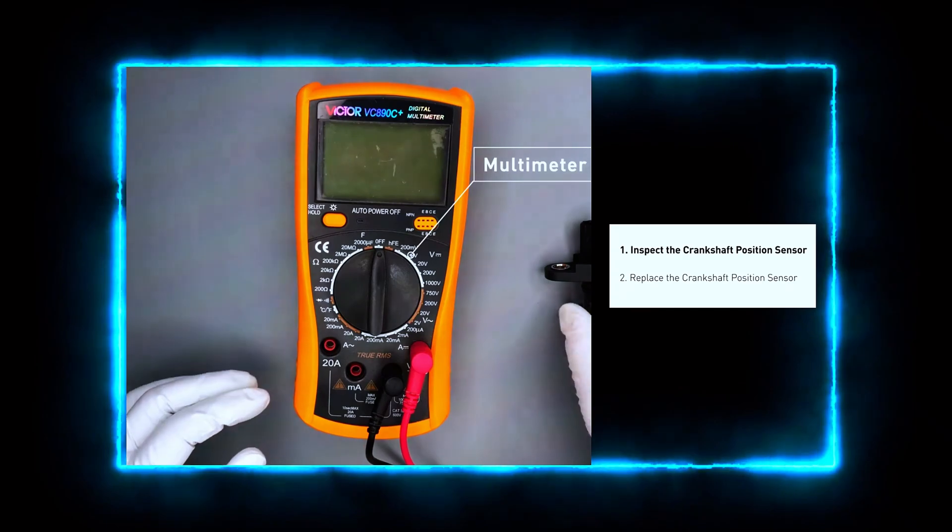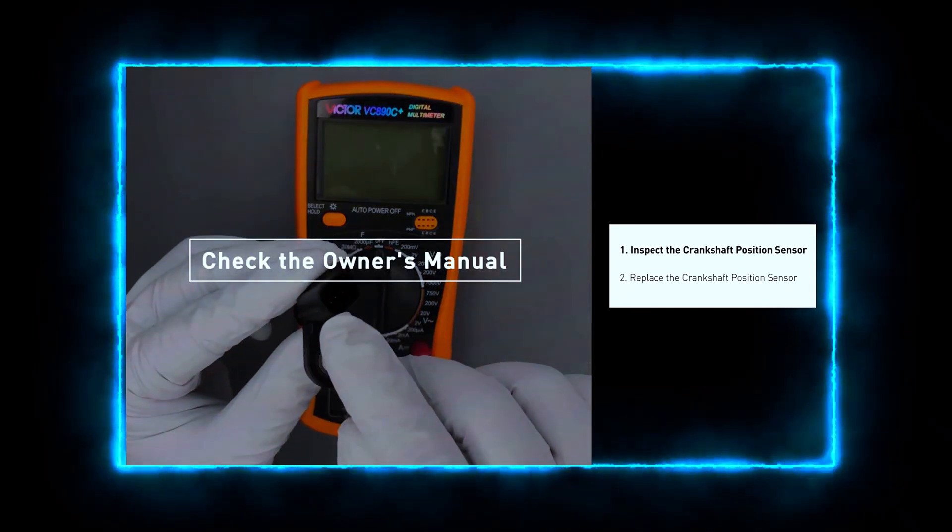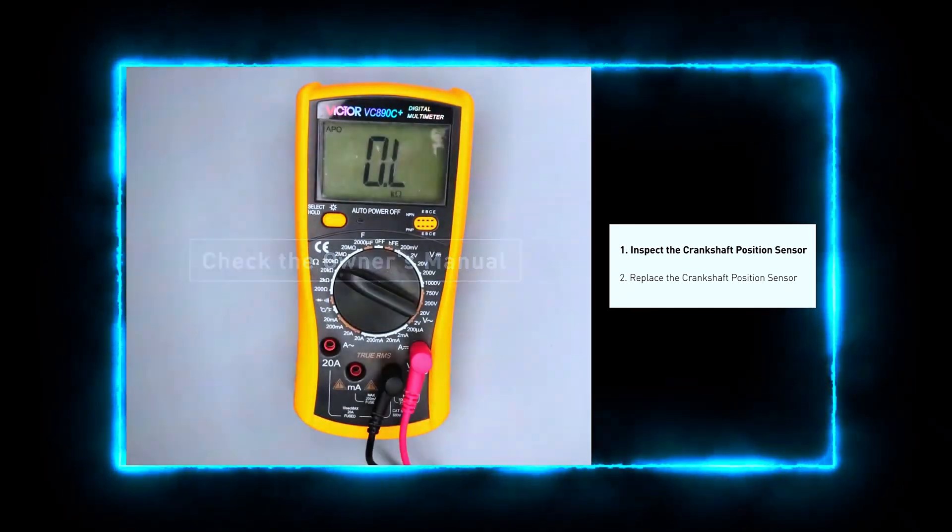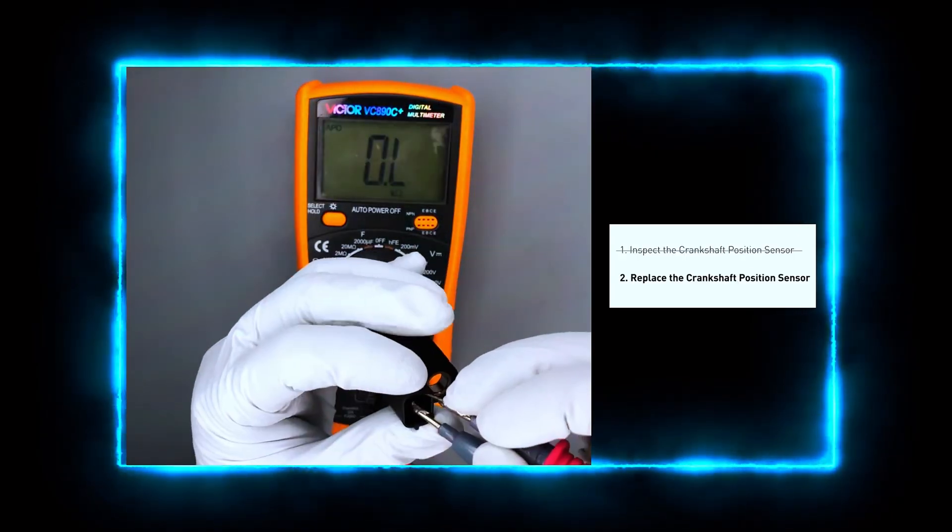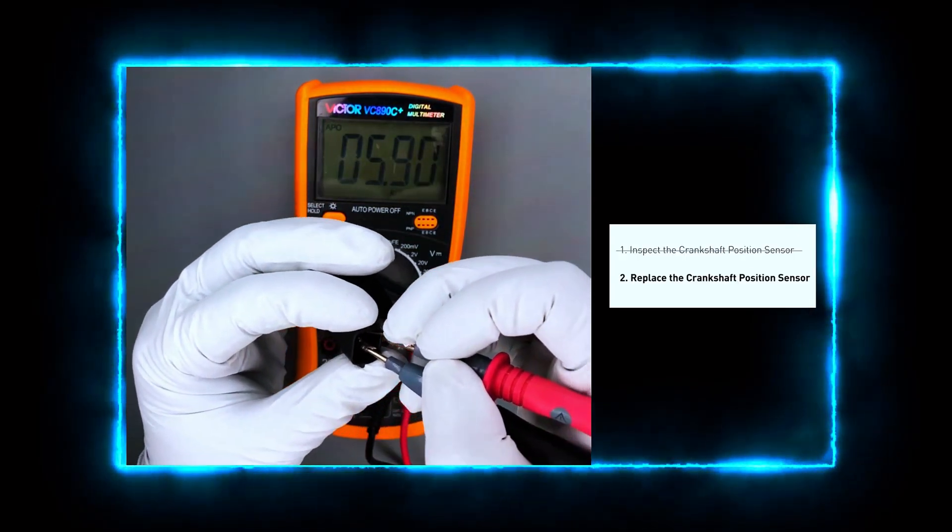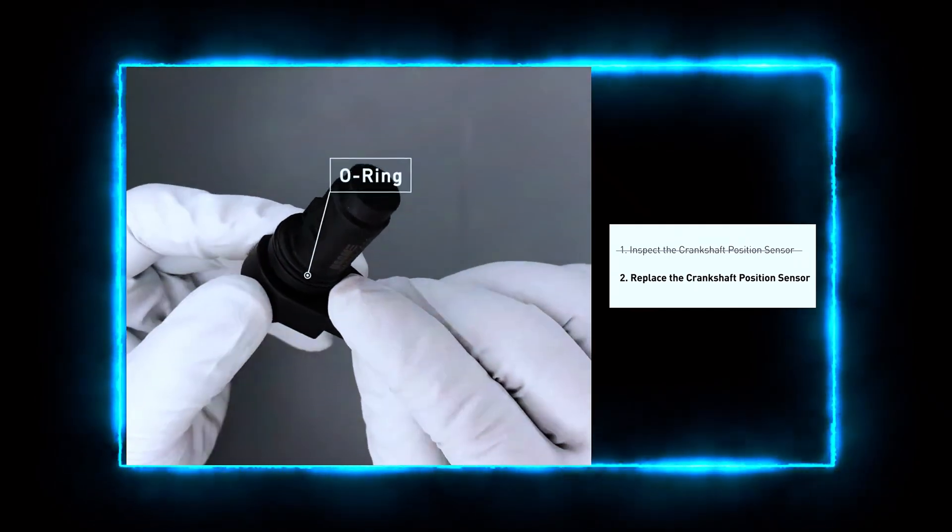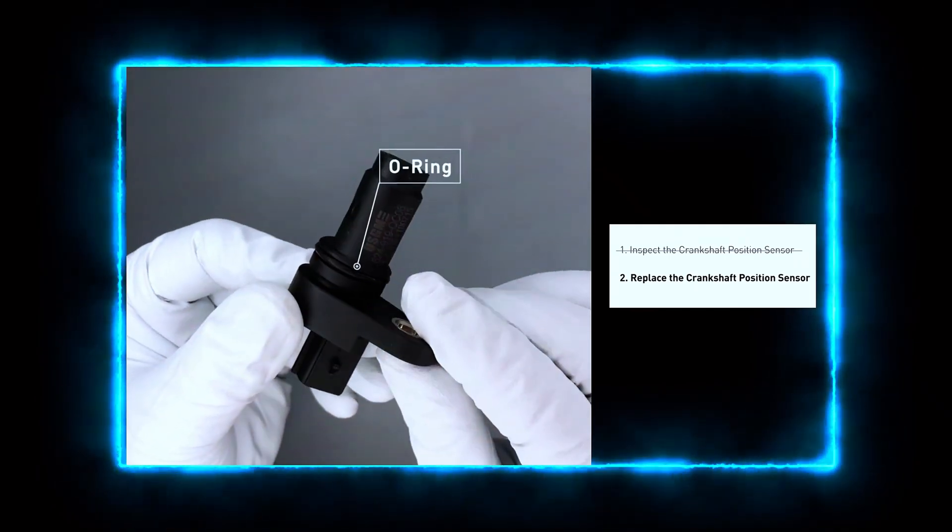Now let's check the sensor using your multimeter. Test the resistance between the sensor terminals. A functioning sensor typically reads between 200 to 900 ohms. If your reading is outside this range, the sensor may be faulty.